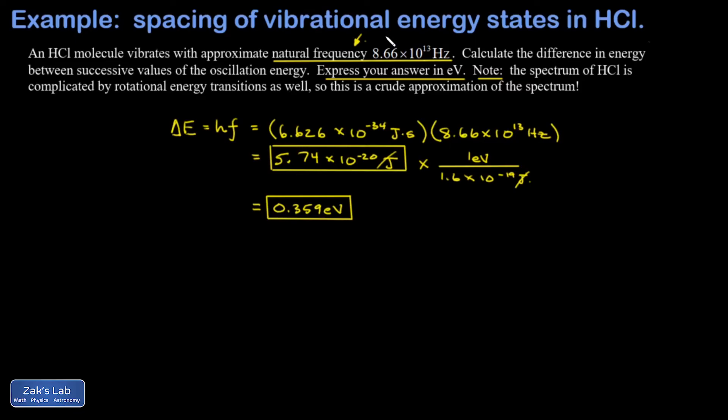The way this differs from a classical oscillator is that we're only allowed to have specific vibrational energies. This is like saying for a classical harmonic oscillator that only certain amplitudes are allowed to occur.